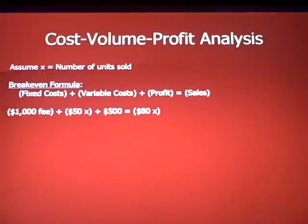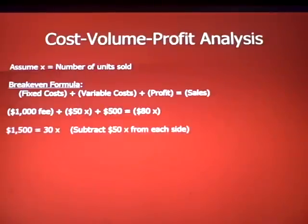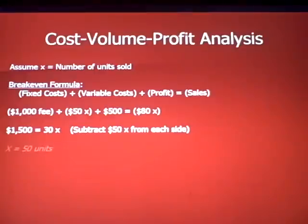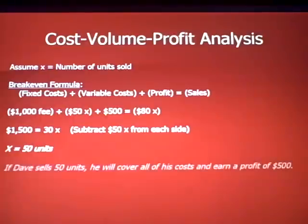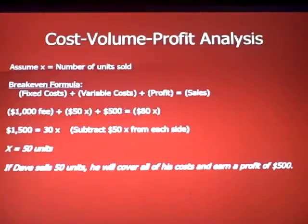Sales equal the eighty-dollar sale price times X units sold. We add the variable cost (fifty dollars times X), the fixed cost (one thousand dollars), and the target profit (five hundred dollars) — and it all equals eighty X. Subtracting fifty X from each side gives us fifteen hundred equals thirty X, so X equals fifty units. This means Dave must sell fifty units to cover all fixed and variable costs and earn a profit of five hundred dollars.